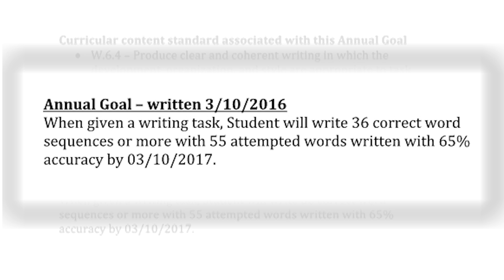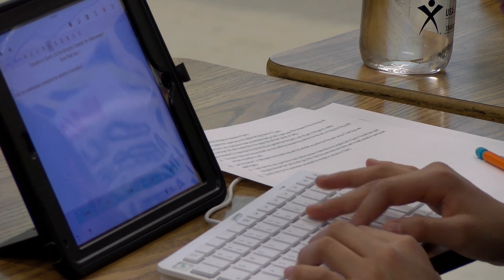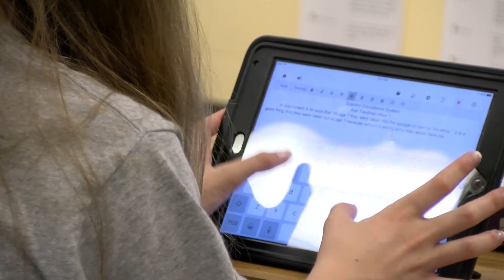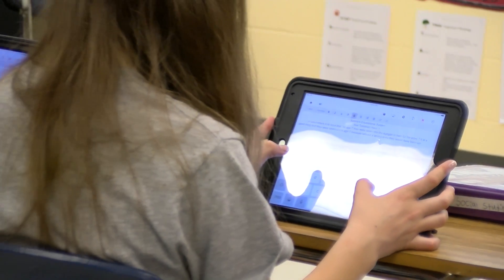In an effort to meet the state and local writing standards, Jackie and her team wrote the following IEP goal using the progress monitoring data as their measuring stick. When given a writing task, Jack will write 36 correct word sequences or more than 55 attempted words written with 65% accuracy by March 10, 2017. A progress monitoring goal that uses data from progress monitoring would talk about how many words a student can write in a certain amount of time. It's very cut and dried, black and white information to share.